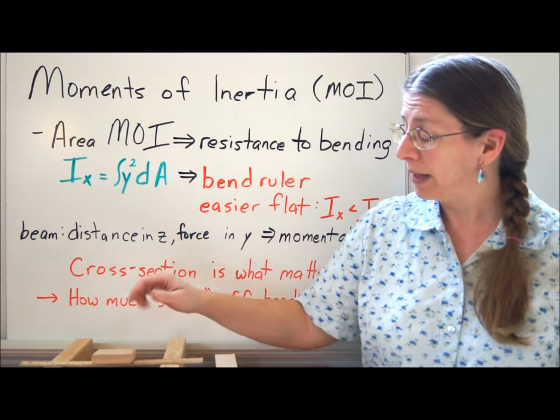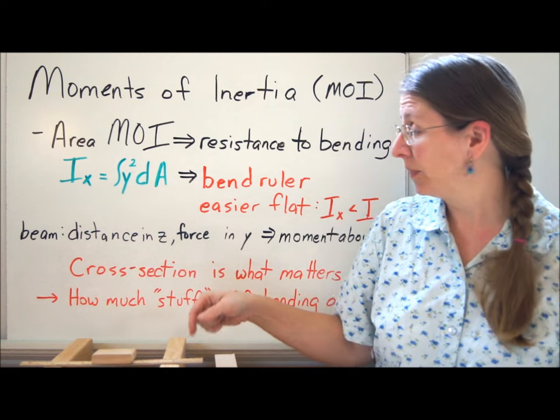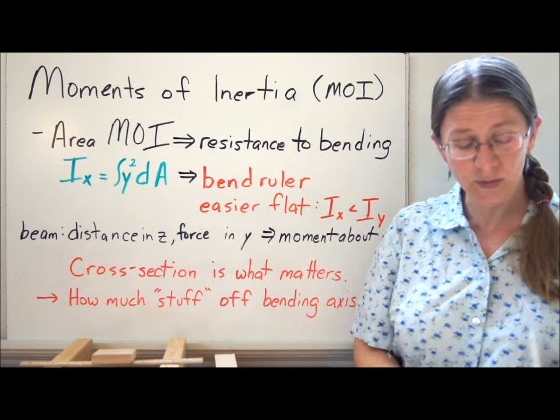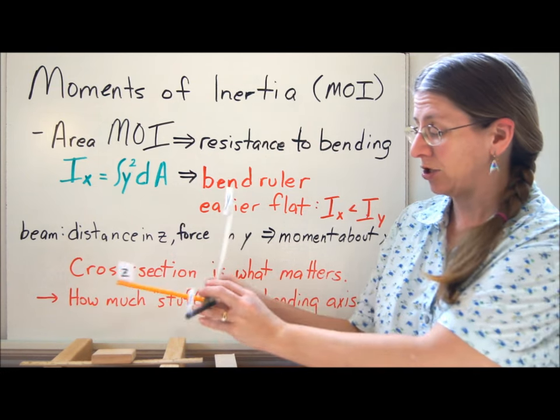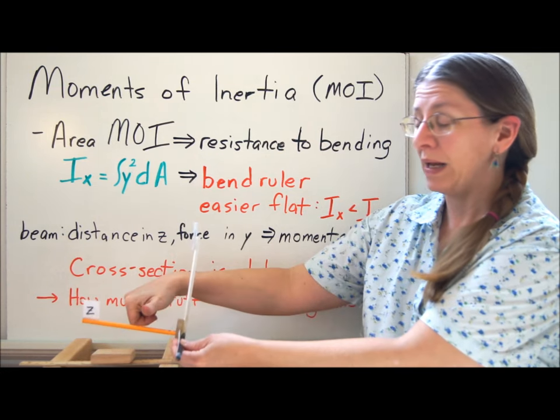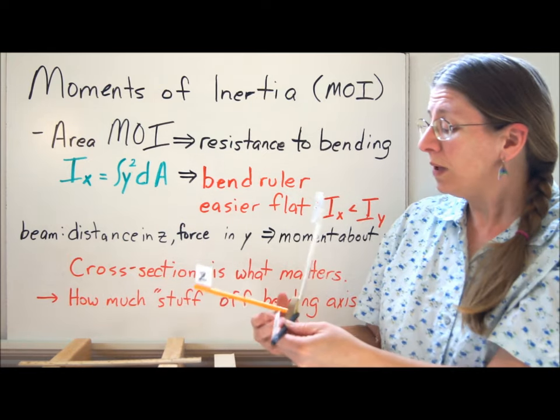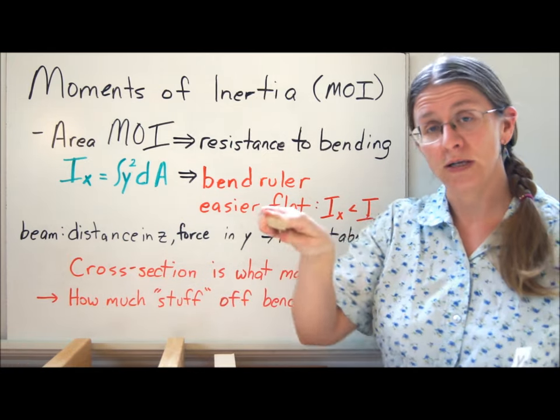The load is in the y, but the distance is in z. So if my beam is in z, my force is in y, what that gives me is a moment in the x direction. So my moment would be out of the plane of the page. What's really important here is the cross section.